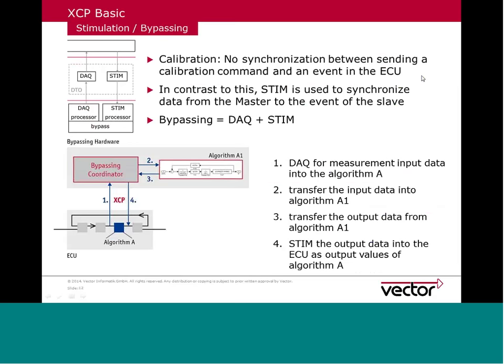We have covered measurement and calibration. Now we move to stimulation and bypassing. Calibration commands — sending a changed value to the ECU — are not synchronized to ECU events; they happen at whatever moment the user presses a button. In contrast, stimulation is used to send data in a synchronized way, tied to specific events in the slave.